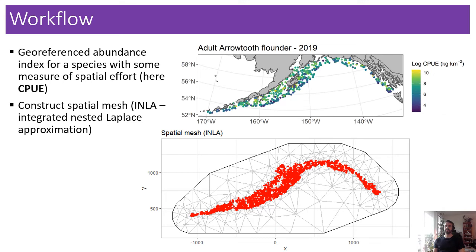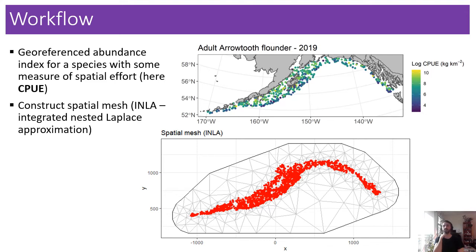The first step of the workflow is to pick a species — you'll be doing this separately for each species — and pick a life stage, adult or juvenile. In this specific case we have adult arrowtooth flounder from 2019. You have your georeferenced dataset with a CPUE, meaning you have embedded in your data a measure of spatial effort. The package then constructs a spatial mesh using the INLA approach — a mesh based on the spatial location of your dataset.